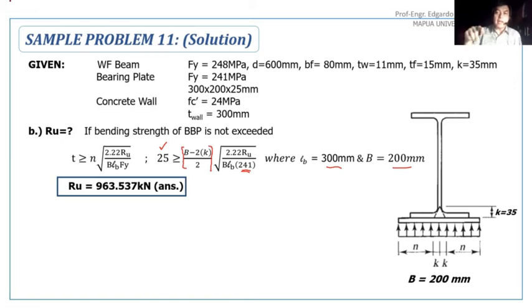Here, we have a problem if we interchange LB and B. We need to know that LB is 300 and B is 200. They cannot be interchanged because in getting the value of small letter N, it's a function of B.